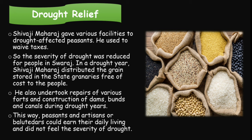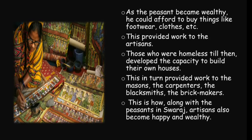Burns and canals were constructed during drought years. This way, peasants and artisans could earn their daily living and did not feel the severity of drought. As the peasants became wealthy, they could afford to buy things like footwear and clothes, providing work to the artisans. Those who were homeless developed the capacity to build their own houses, providing work to the masons, carpenters, blacksmiths, and brick makers. This is how, along with the peasants in Swaraj, artisans also became happy and wealthy.